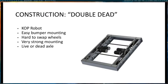That said, the doubly-supported system is structurally very robust. You can also build it with a live axle by moving where the bearings are, though there aren't many benefits since wheel swapping remains difficult.